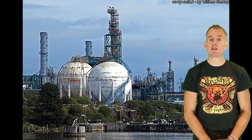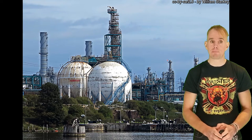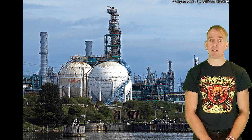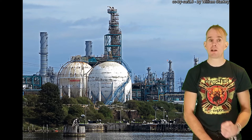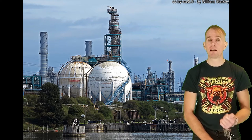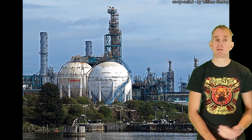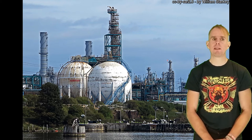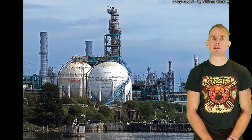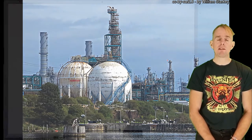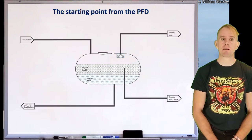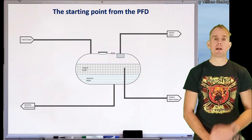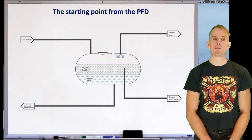We'll start this process by considering the control system, then add on layers of increasing detail, addressing such factors as isolation, bleeding, nitrogen systems, pressure relief, and so on. The best way to illustrate this process is by example, so let's consider a simple three-phase separator used to separate vapour from two immiscible liquid phases.